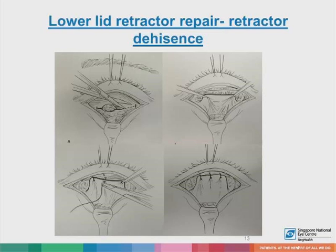For the lower lid retractor repair, when retractor dehiscence is present, we open the septum after performing the subsidiary incision to expose the post-septal fat and pre-retractor fat, which will be bulging out. This helps identify the lower lid retractors. The fat is pulled downwards and you can see the clean sheet of the lower lid retractor — the equivalent of the levator in the upper lid. This is then sutured onto the tarsal plate with three 6-0 Vicryl sutures, and closed with direct skin apposition.